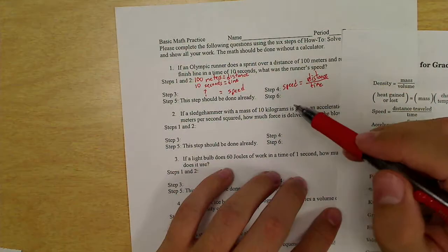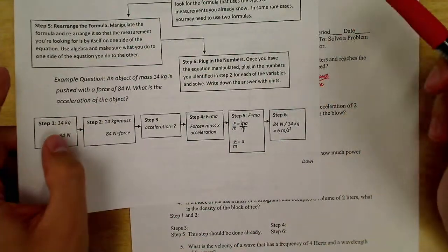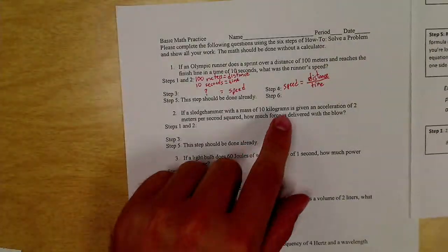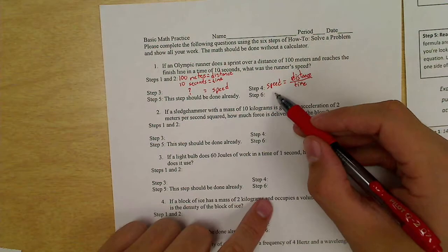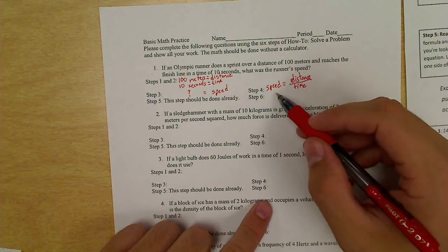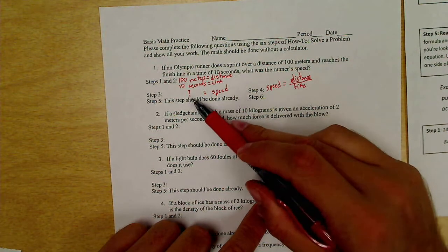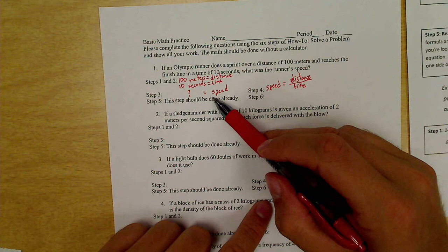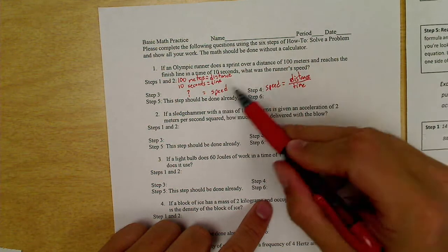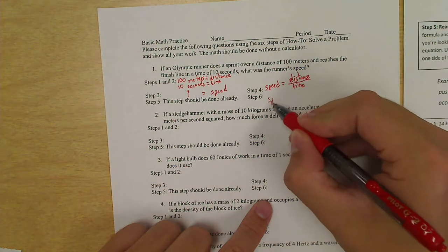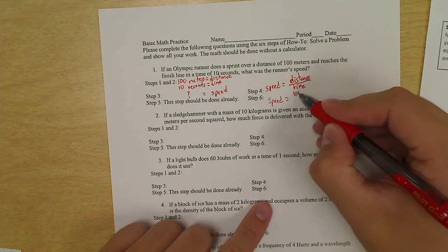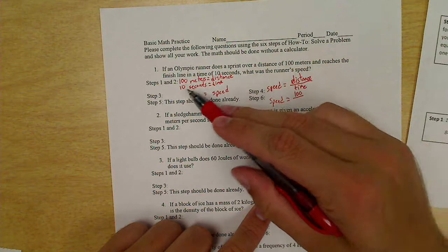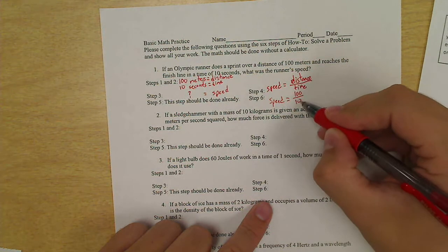Step six. If we've done the other steps, step six is really easy, plug in the numbers. So that means I take this formula and I write it down again, except whenever I write it this time, if I know any of these numbers, I put the real number in. So speed, and look, there's not even thinking. All I have to do is just glance over here and look at this little speed. Nope, don't know what that is. So speed equals distance. Oh, my distance, that's 100. Time equals time. Oh, that's 10. 100 divided by 10.